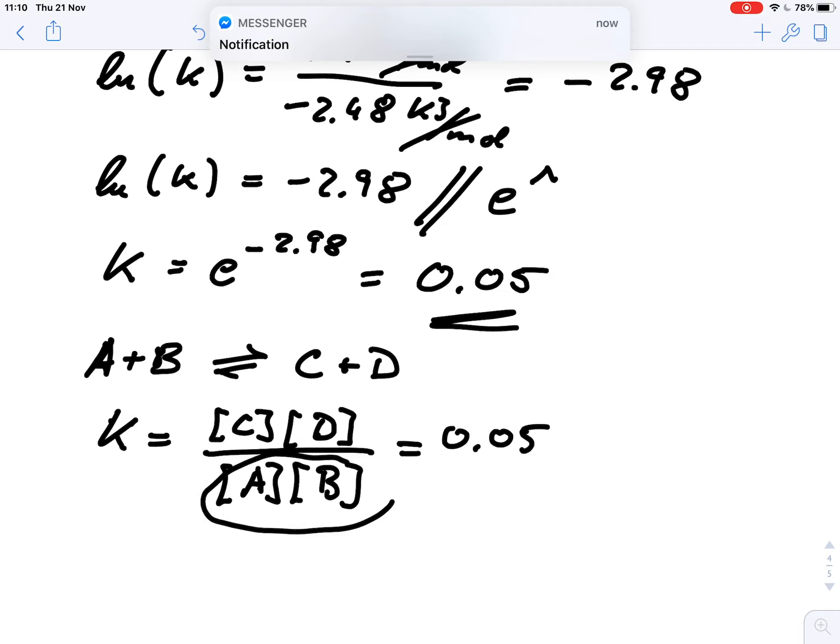So we can basically say that in the equilibrium we have far more of the reactants compared to the concentrations of the products.